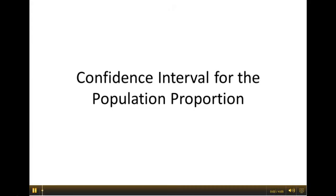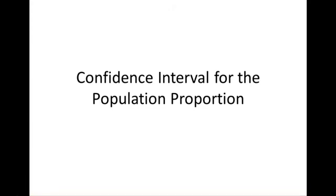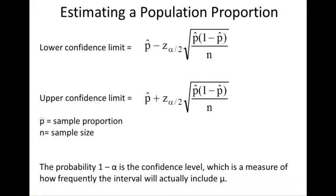Let's take a look at how to calculate a confidence interval for the population proportion. Here's your formula for estimating a population proportion, and because we're working with a confidence interval, we have to have a lower confidence limit and an upper confidence limit.